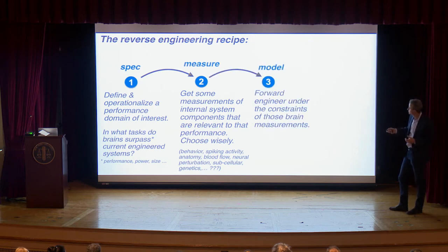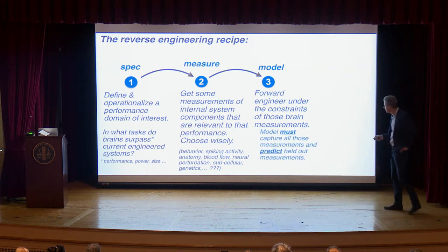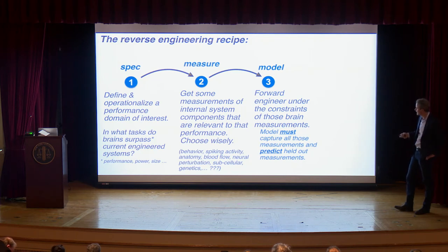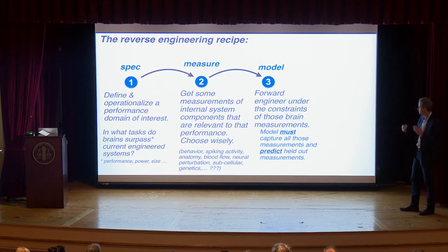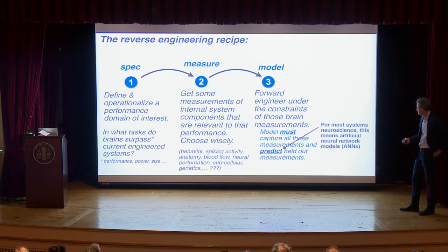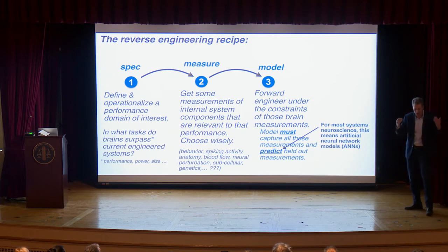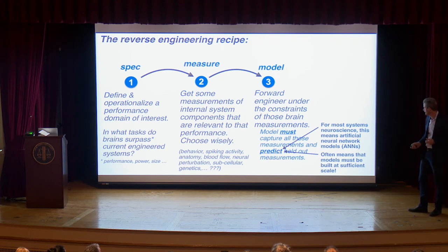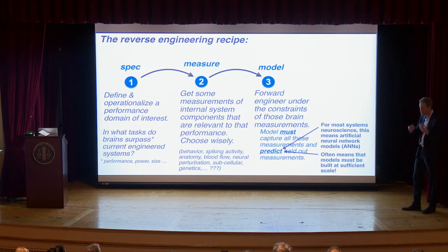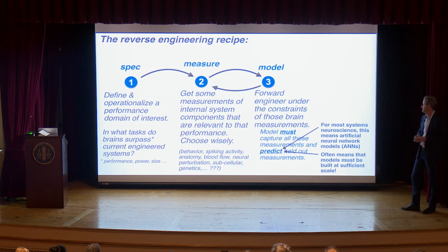But you can't stop at measurement — you have to actually build models. I like to think of this as forward engineering under the constraints of those brain measurements. The model must capture all the measurements and predict held-out measurements. If we as scientists are going to claim understanding, we better be able to predict held-out measurements. In practice for most systems neuroscience, this means working with artificial neural networks, because they have neurons that can be mapped to the brain, allowing us to make predictions. These models must often be built at scales that approach the complexity of the tasks.